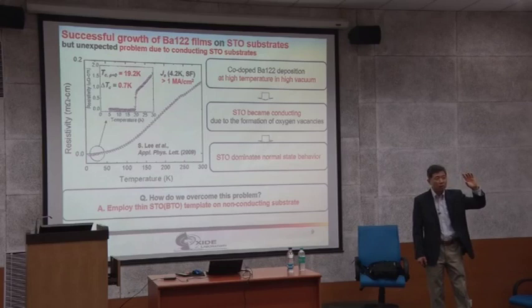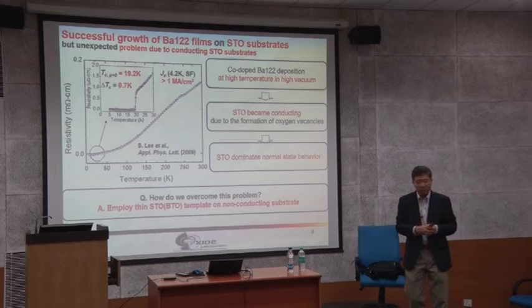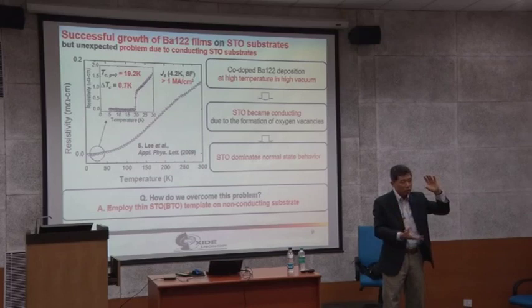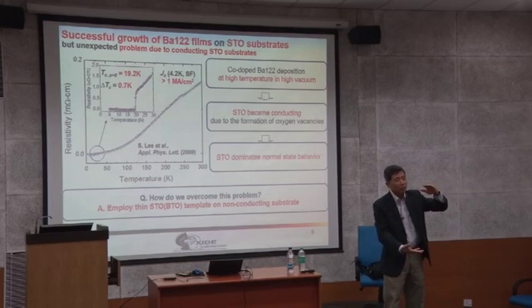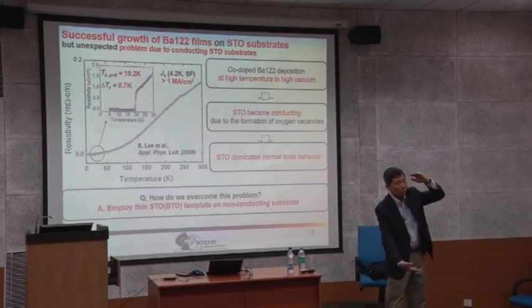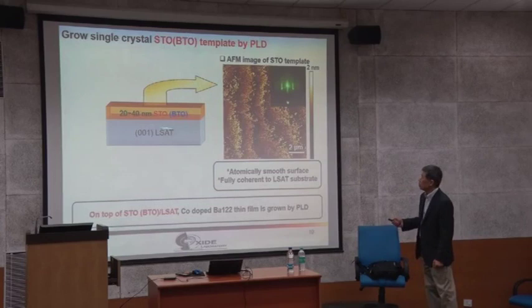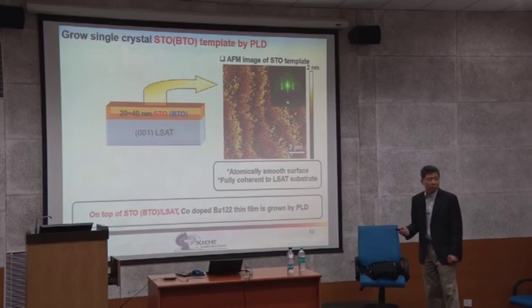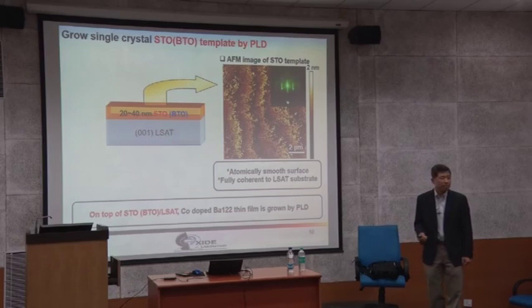So when you measure transport, you short out the measurement — the normal state resistance is coming from your substrate. STO becomes conducting due to formation of oxygen vacancies, which dominates normal state behavior. How do you overcome this problem? You have to use STO as a very thick bulk substrate. On a non-conducting substrate, if the STO is very thin, your actual resistance is very high compared to your Ba122 superconducting material. The current flows only through the superconductor, not the template layer — relative resistance determines the current distribution.